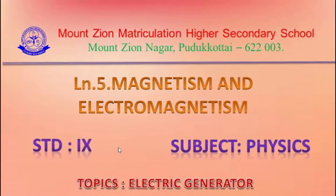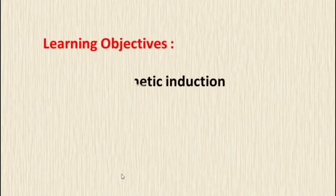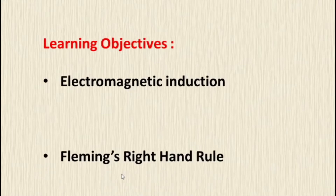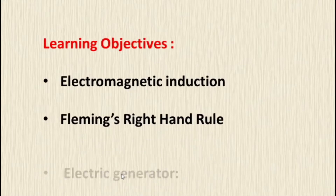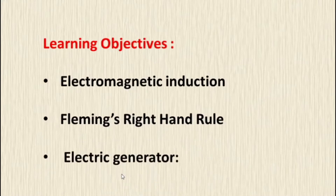Today you will learn about Lesson 5: Magnetism and Electromagnetism, topic: Electric Generator. The learning objectives of today's class are to understand electromagnetic induction, Fleming's right hand rule, and electric generator.